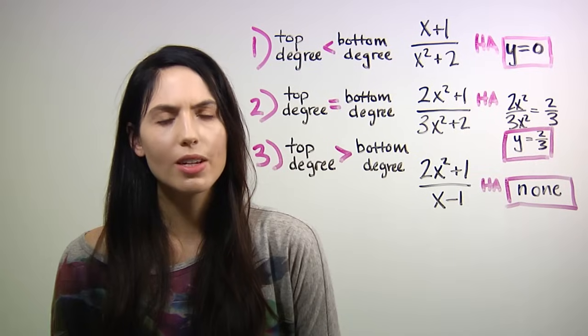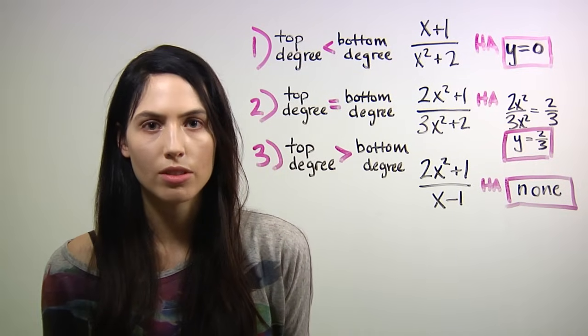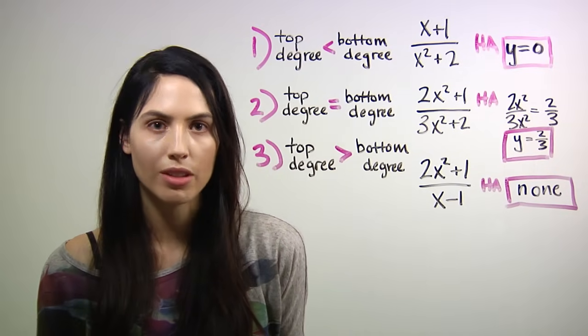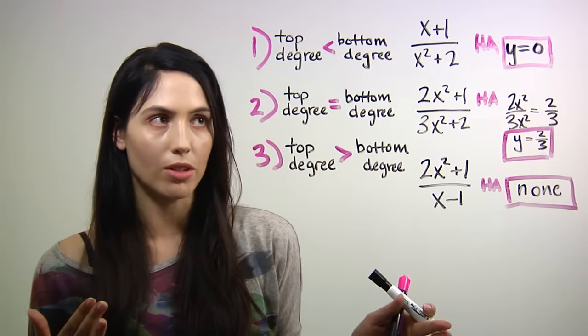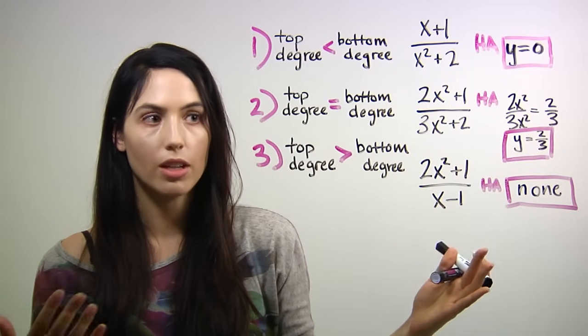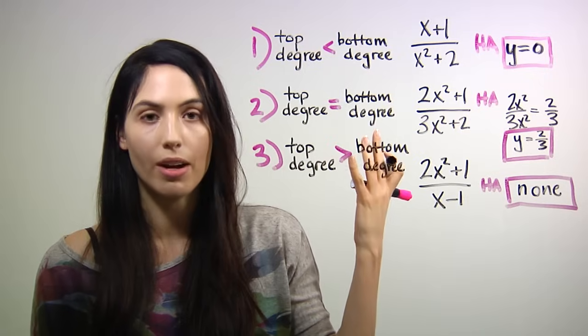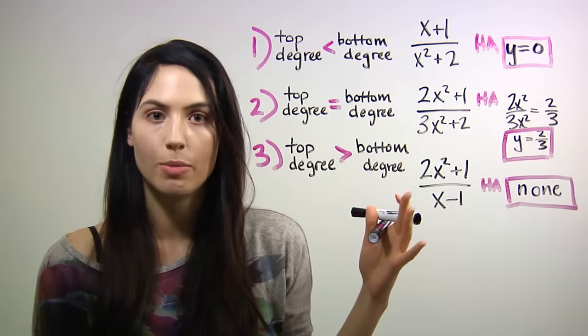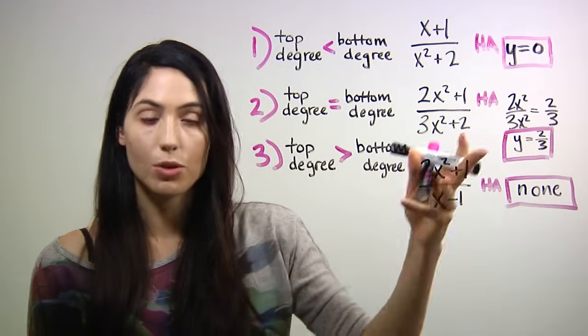So I think what trips people up is that they think they need to use some formal definition of the limit to find the horizontal asymptote. You don't. For a rational expression, meaning numerator over denominator, or rational function, you really just need to remember these three rules. Is the top power, highest power, larger than the bottom highest power? Is it equal? Is it less than? In those three cases. So don't mess with limits. Just remember the rule.